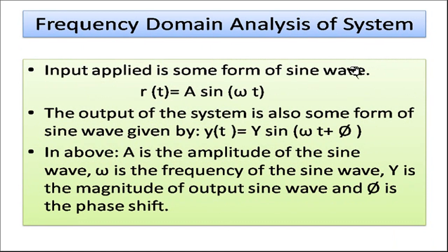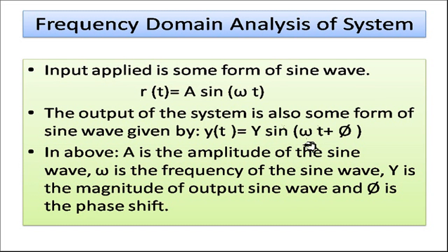When a sinusoidal input r(t) = A sin(ωt) is applied, the output is also sinusoidal: y(t) = Y sin(ωt + φ), where the amplitude Y differs from A, the frequency ω remains the same, and φ is the phase shift. Here A is the input amplitude, ω is the frequency, Y is the output magnitude, and φ is the phase shift.